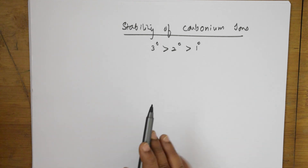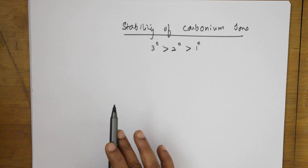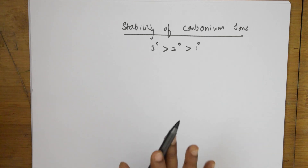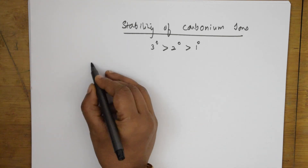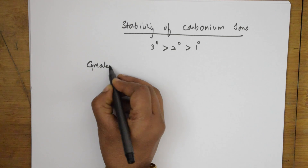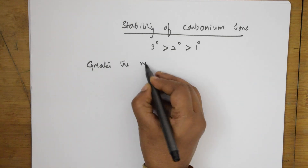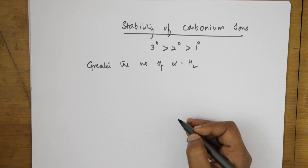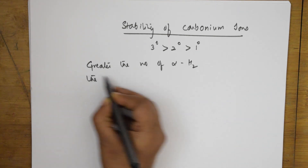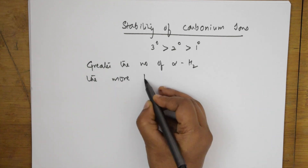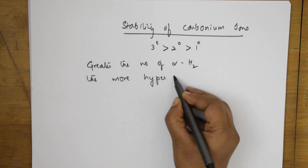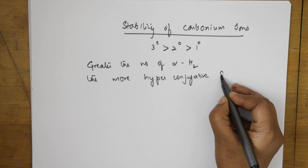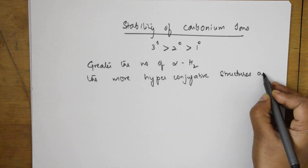Greater the number of hydrogen atoms attached to the alpha carbon atom — that is, alpha hydrogens — the more hyperconjugated structures are formed. Once again: greater the number of alpha hydrogens, the more hyperconjugated structures are formed.